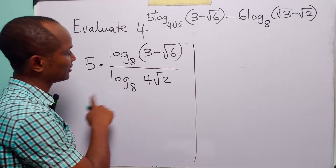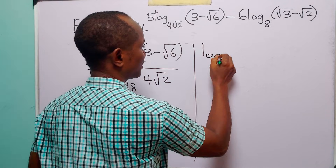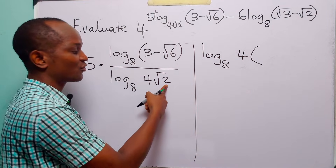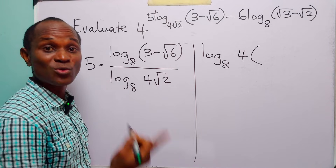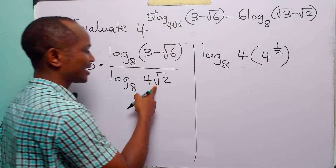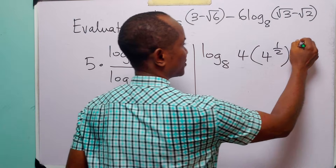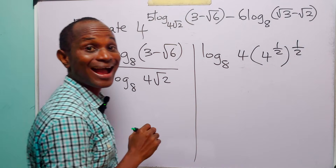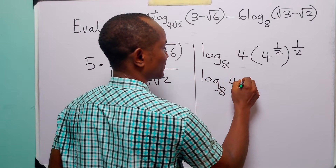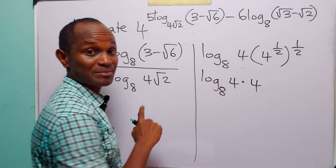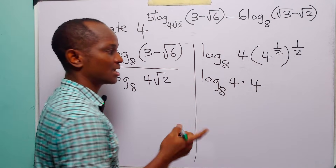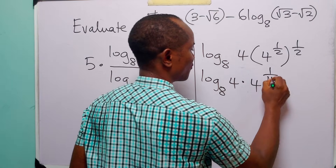Now let us look at this denominator. We have log to base 8 of 4 multiplied by root 2. You know that 2 is the square root of 4, so we have 4 to the power half. And we have the square root of 2, so we have that to the power half as well. This gives us log to base 8 of 4 times 4 to the power half times half. To get rid of the brackets, we multiply these two powers, giving us 1 over 4.